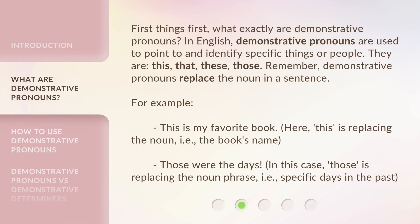First things first, what exactly are demonstrative pronouns? In English, demonstrative pronouns are used to point to and identify specific things or people. They are: this, that, these, those. Remember, demonstrative pronouns replace the noun in a sentence.